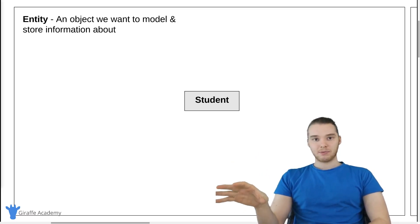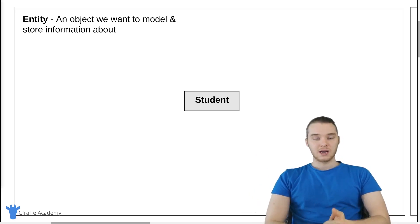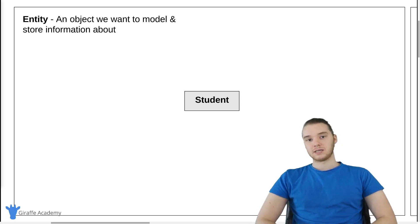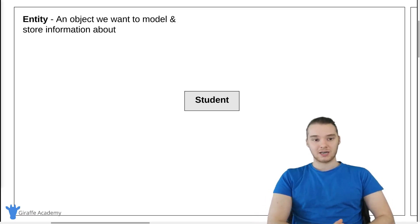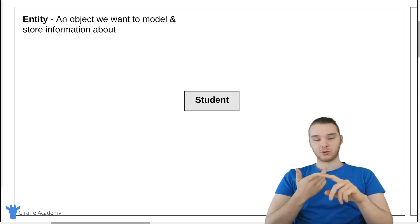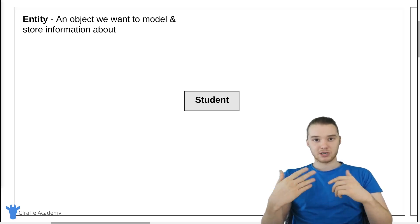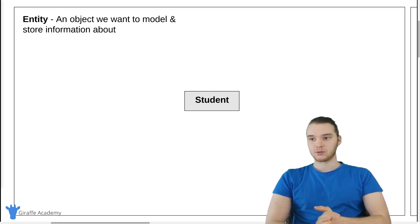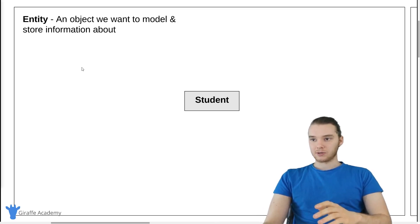In this example, I'm going to be using the example of a school. So let's say that I'm working for a school and my boss comes to me and says, 'Mike, I need you to design an ER diagram for our database.' So maybe this database is going to store information about different students, and then maybe information about the classes that those students take. So let's start looking at the different parts of the ER diagram.